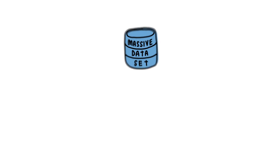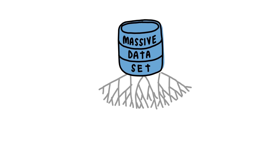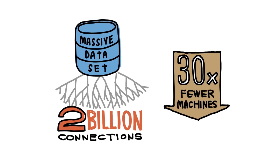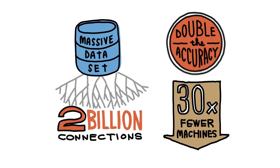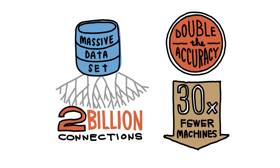To do this, we took the largest data set we could find and framed a massive neural network with over 2 billion connections, using 30 times fewer machines, and developed an image classifier that produces double the accuracy of other systems in the industry. The results are mind-blowing.